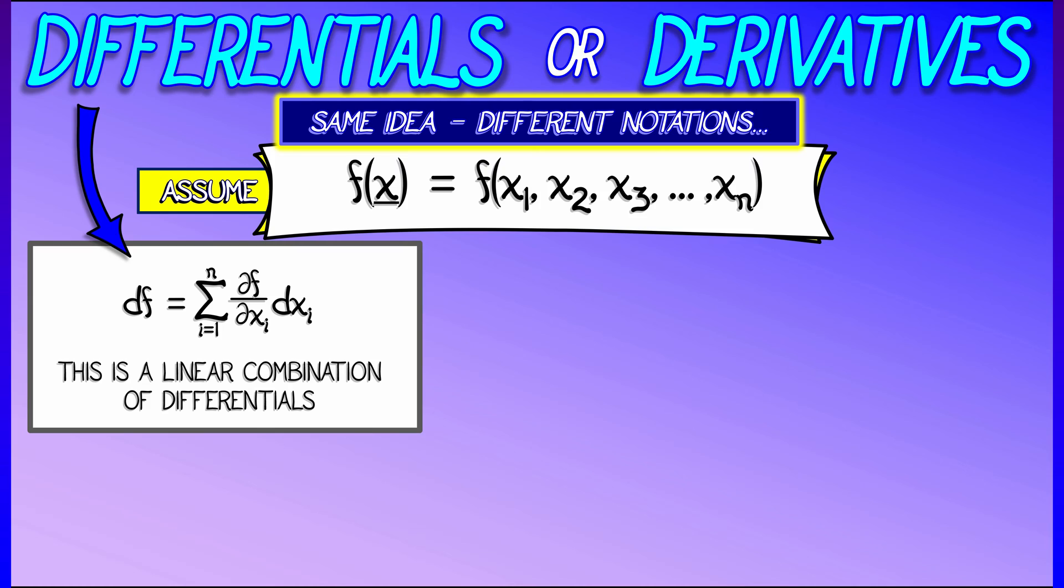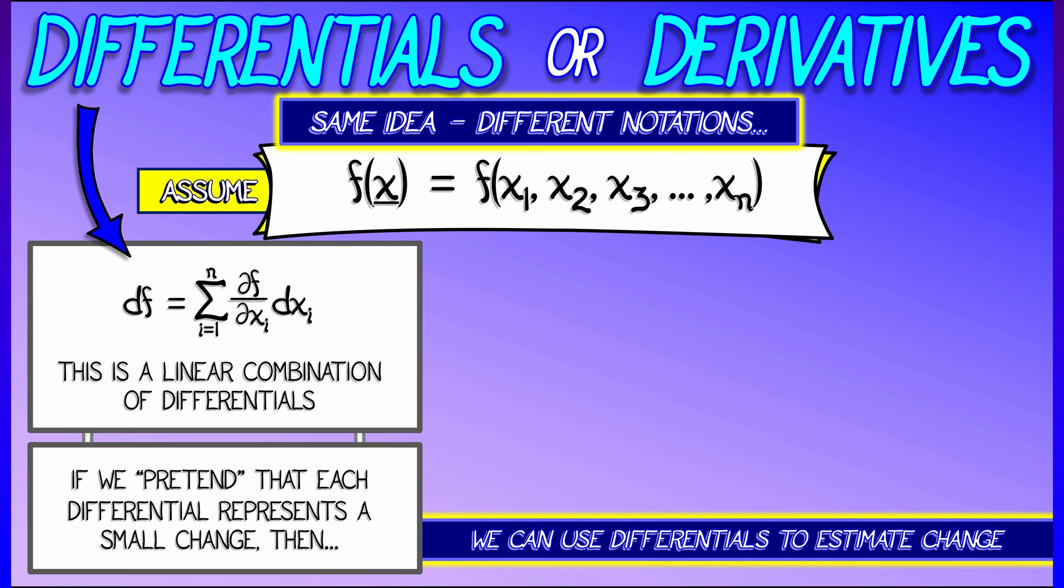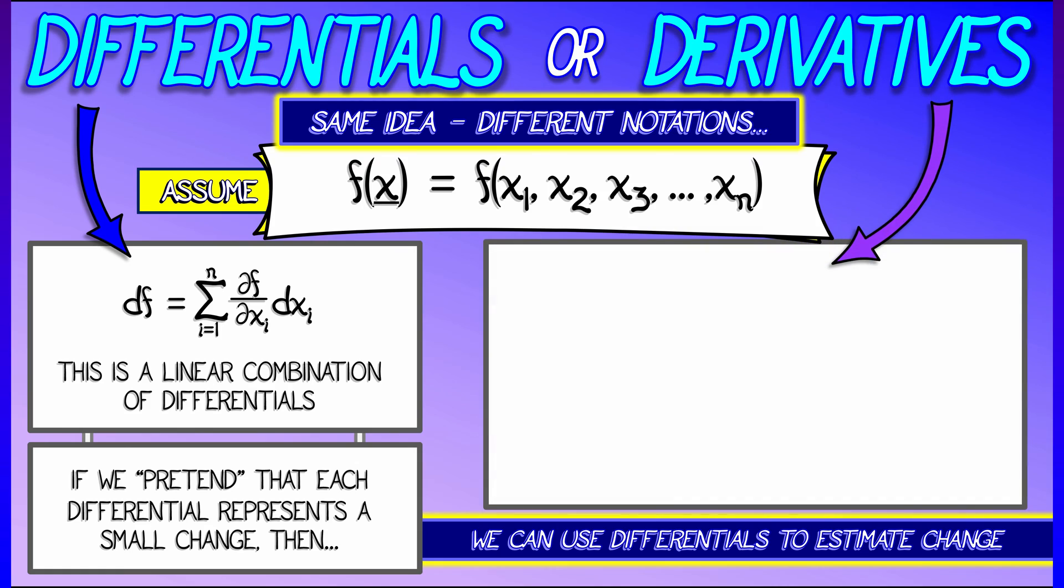If we think of each of those dxᵢ terms as representing a small change in xᵢ, or a rate of change if you like, then df represents a small change in the output. And we can use those differentials to estimate changes.